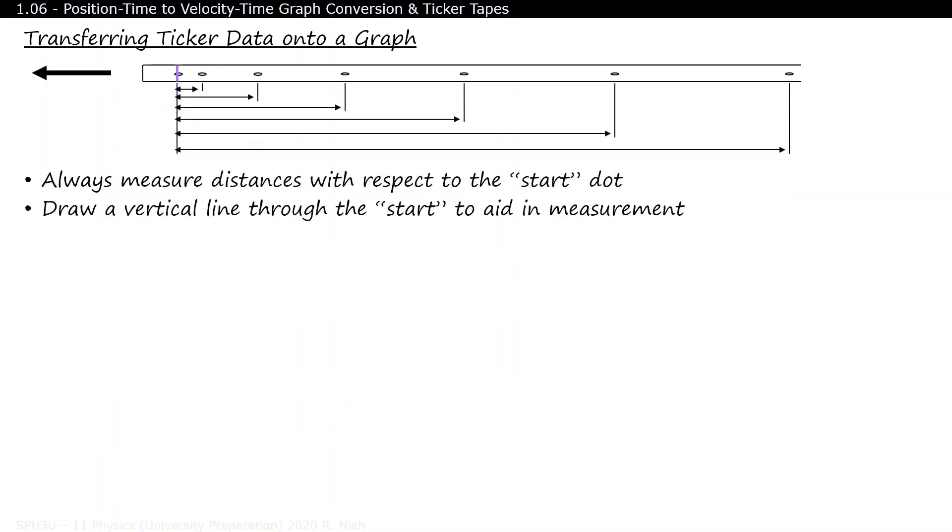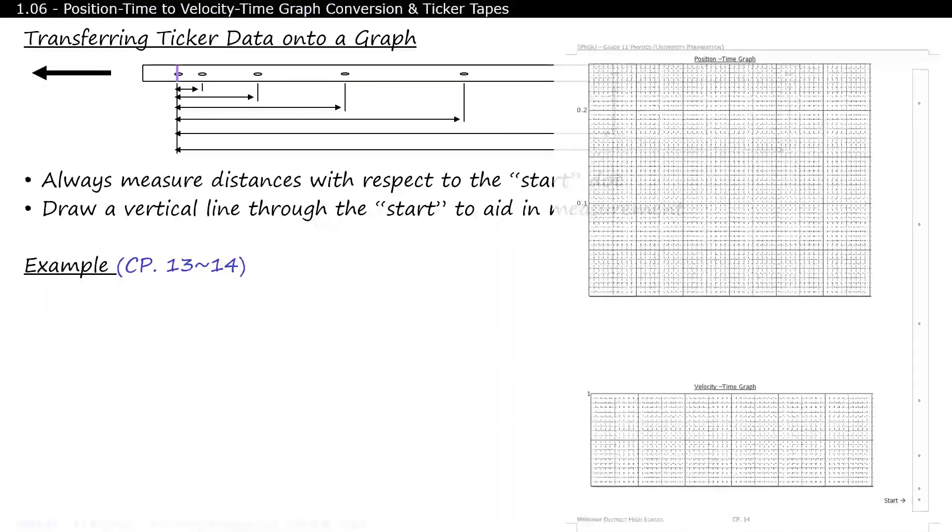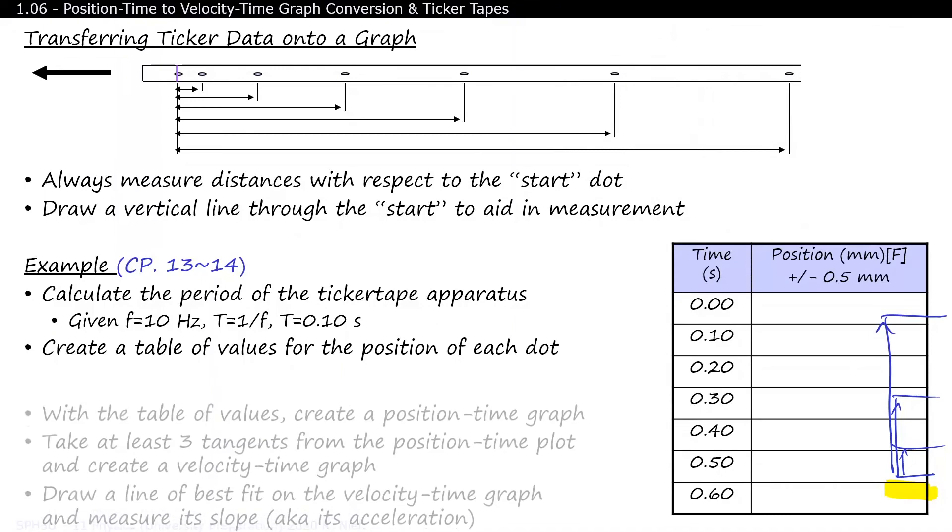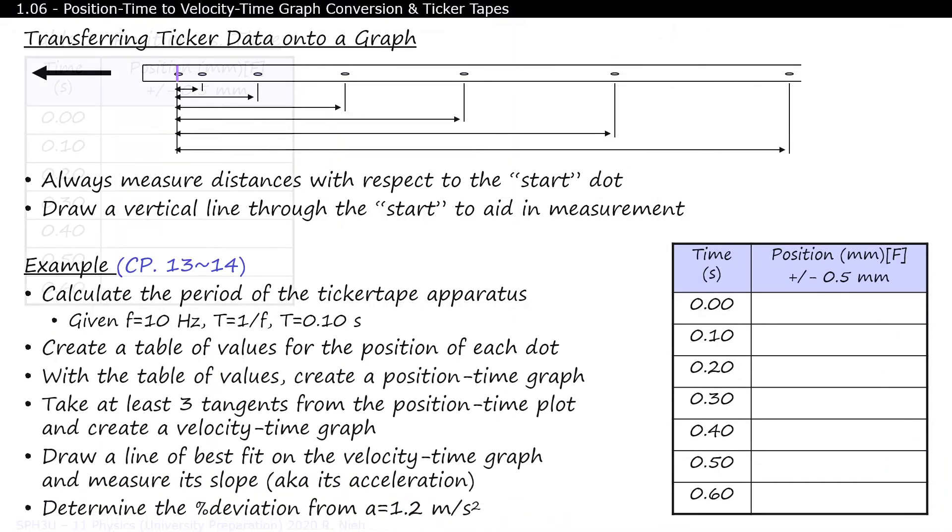For homework tonight, take a look at course pack page 14. Let's pretend that we have an ideal ticker timer that resonates at 10 Hz. If the frequency is at 10 Hz, then the period is at 1 over 10 Hz, or at 1 tenth of a second. So the dots are separated by a tenth of a second. The start dot is at the bottom of the page. Measure from the bottom and create a table of values for the position of each dot.